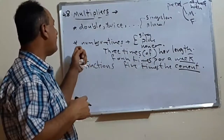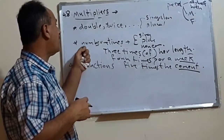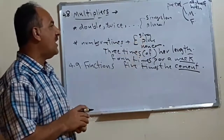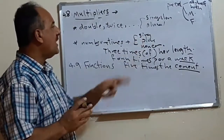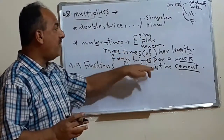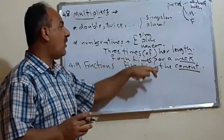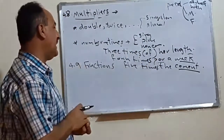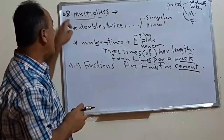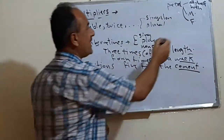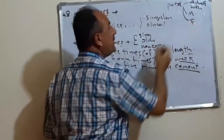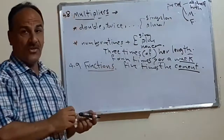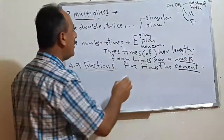So to summarize: the first group consists of 'double' and 'twice.' The second group consists of number plus 'times,' and can be followed by a singular, plural, or non-count noun. The word 'of' or 'per' is optional and can be deleted. This completes the second type of multipliers.